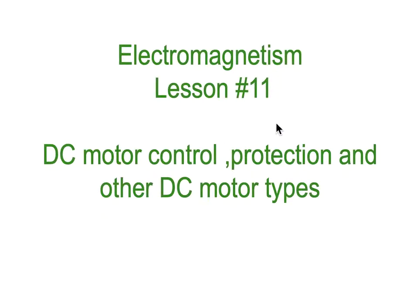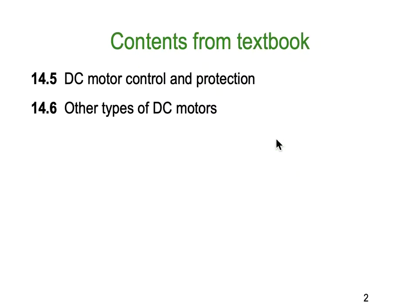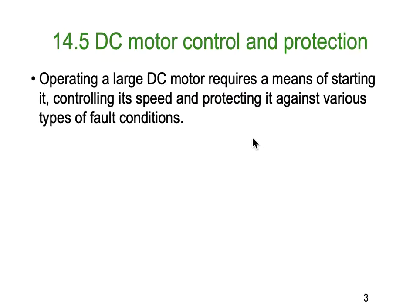Hello, it's Dr. Ken here with you again. This is Electromagnetism lesson number 11, our last lesson in Electromagnetism. We're looking at DC motor control, protection, and a few other variations of DC motor types. If you're using the contents of the textbook, this is sections 14.5 and 14.6. So, first off, DC motor control and protection.